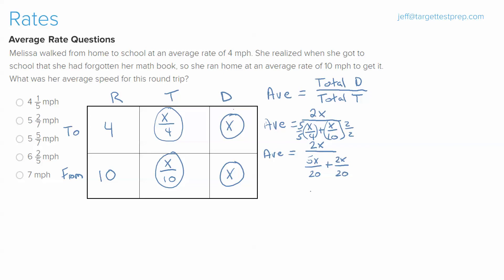And what we have for an average, as we keep going down here, is 2x over 7x over 20. The last step here, as everyone knows, when you're dividing by fractions, you flip and multiply.